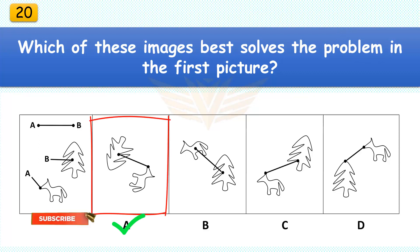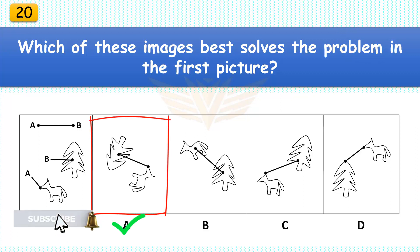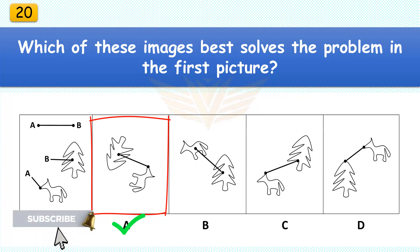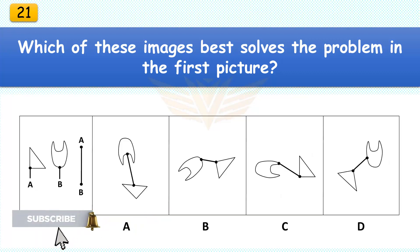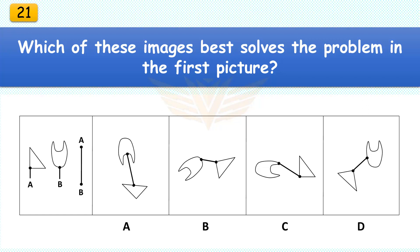Which of these images best solves the problem in the first picture? The correct answer is A. Rotate the wolf 90 degrees and rotate the pine tree greater than 135 degrees.